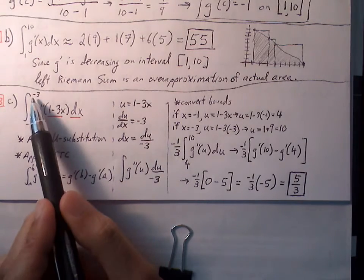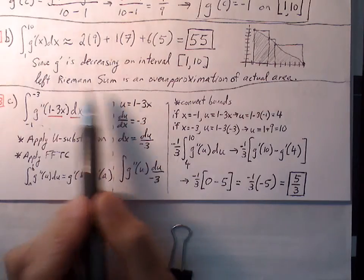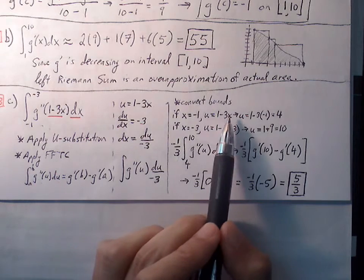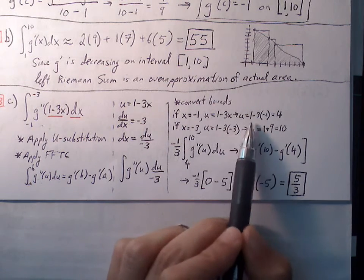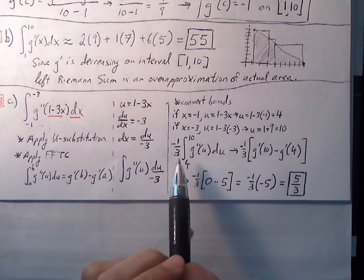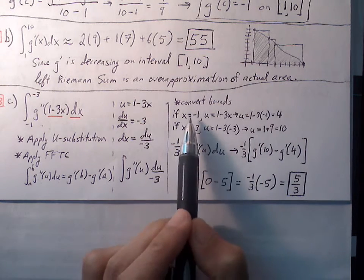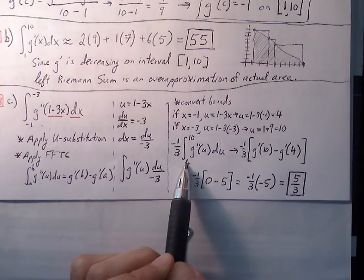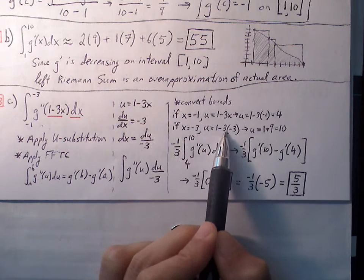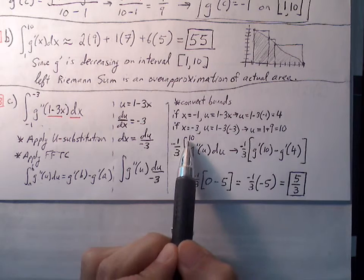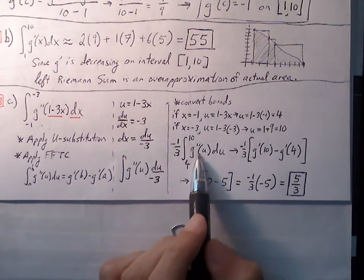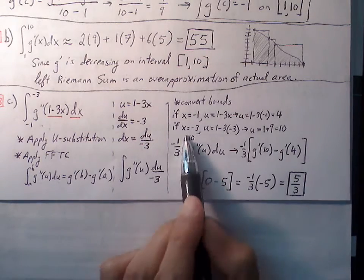We push the bounds through our conversion u equals one minus three x. Plugging negative one in for x: one minus three times negative one equals one plus three equals four. So our new lower bound goes from negative one to positive four. For our upper bound, plugging negative three in for x: one minus three times negative three equals one plus nine equals ten. So our new upper bound is ten. Now everything is in terms of u, and our bounds are also in terms of u.